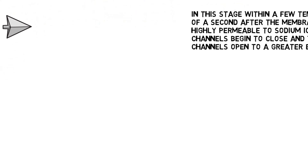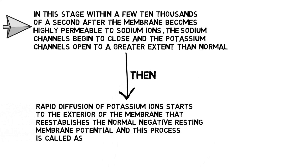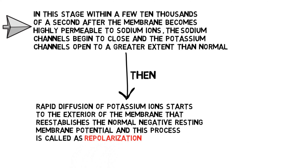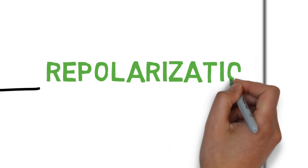Coming to the third stage — the repolarization stage. Within a few ten-thousandths of a second after the membrane becomes highly permeable to sodium ions, the sodium channels begin to close and the potassium channels open to a greater extent than normal. Rapid diffusion of potassium ions then occurs to the exterior of the membrane, re-establishing the normal negative resting membrane potential — this process is called repolarization. On the graph, we see this lowering of membrane potential back towards the negative as the repolarization stage.